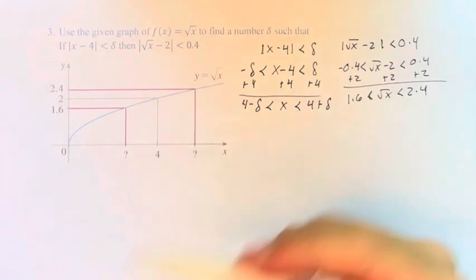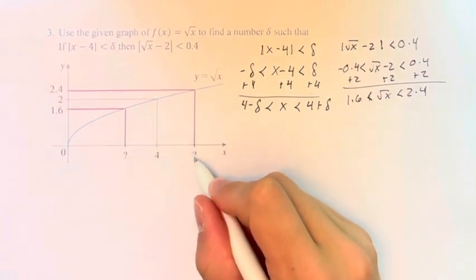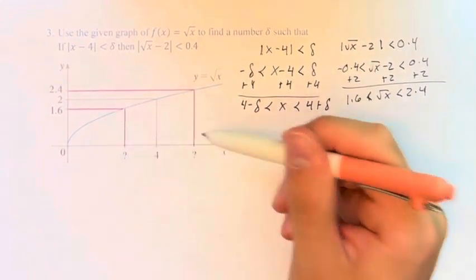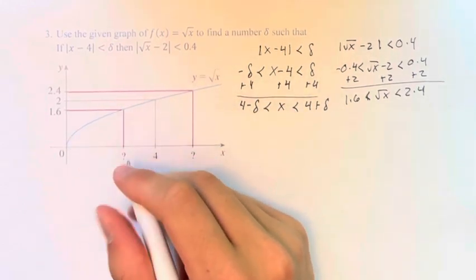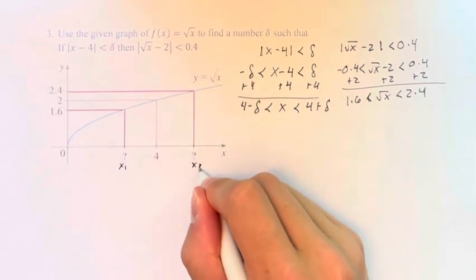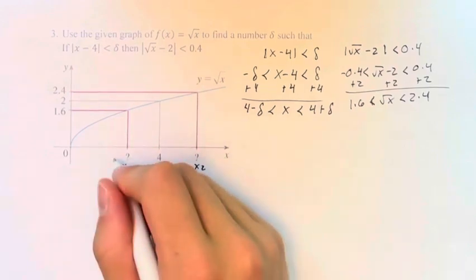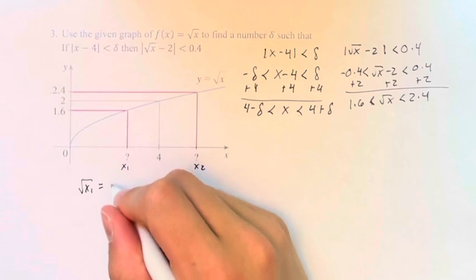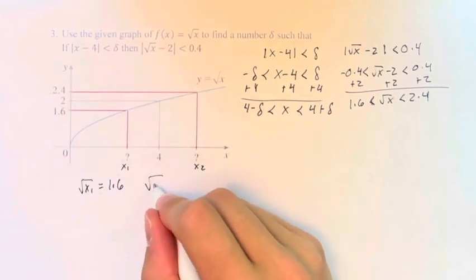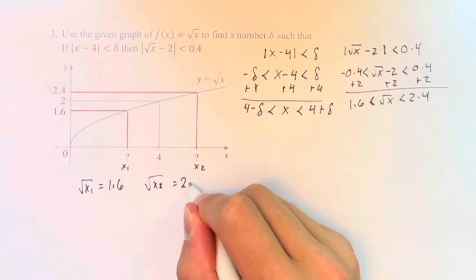So that corresponds with these points here that we have to first find what they actually are. So if x, let's just call this x1 and x2 for these values of x, the square root of x1 we know is 1.6 because that's the corresponding value of the function. And the square root of x2 is 2.4.